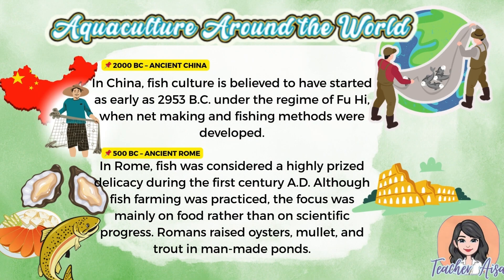Now let us take a journey around the world to discover how aquaculture began. In China, as early as 2953 BC under the regime of Fuhai, people developed net making and fishing methods — marking the earliest known beginnings of fish culture. Meanwhile, in Rome during the first century AD, fish was considered a highly prized delicacy. Although fish farming was practiced, it was mainly for food, not scientific advancement. Romans raised oysters, mullet, and trout in man-made ponds.